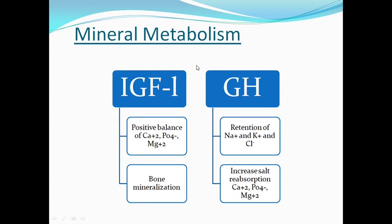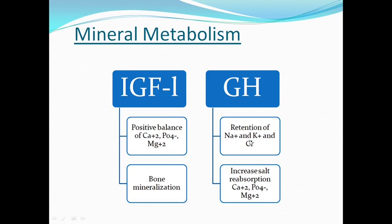Now, the mineral metabolism affected by growth hormone. Growth hormone acts on mineral metabolism via insulin-like growth factor 1 or directly. Via IGF-1 it causes positive balance of calcium, phosphate, and magnesium ions inside the body, causing excessive deposition of calcium, phosphate, and magnesium, and bone mineralization in growing children. Growth hormone directly increases the retention of sodium, potassium, calcium, and chloride inside the nephron, causing increased reabsorption of calcium, phosphate, and magnesium from the kidney and retention of minerals in the body, showing a mineralocorticoid-like effect.